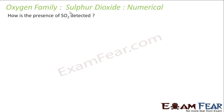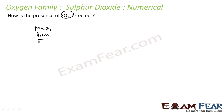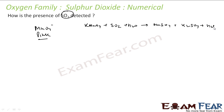How is the presence of SO2 detected? The pink KMnO4 (potassium permanganate) solution will turn colorless. When KMnO4 reacts with Sulphur Dioxide and water, you get MnSO4, K2SO4, and H2SO4 — and this product mixture is colorless, while the original KMnO4 was pink.